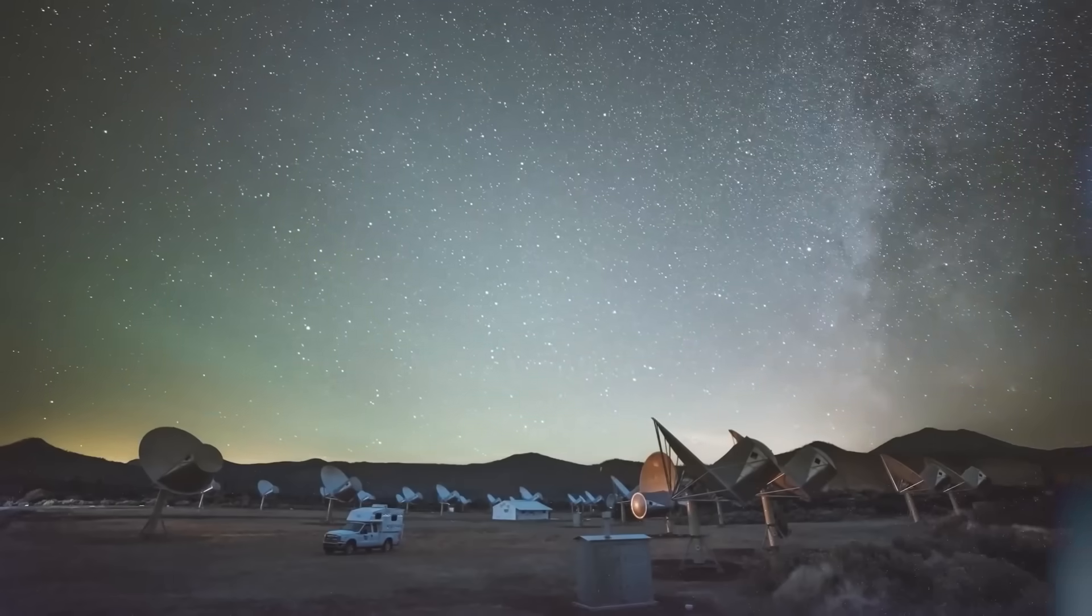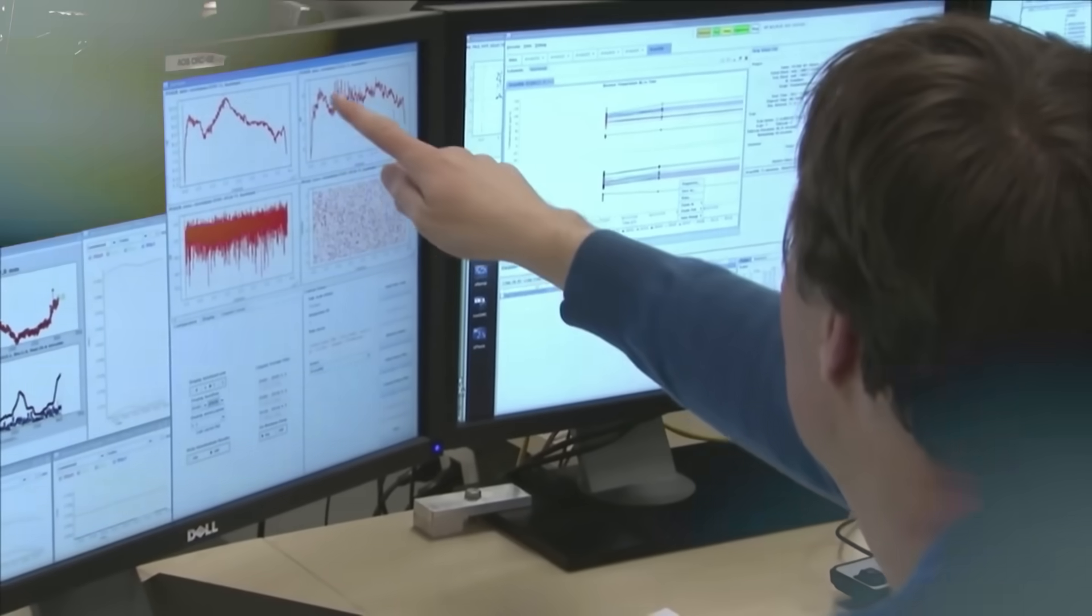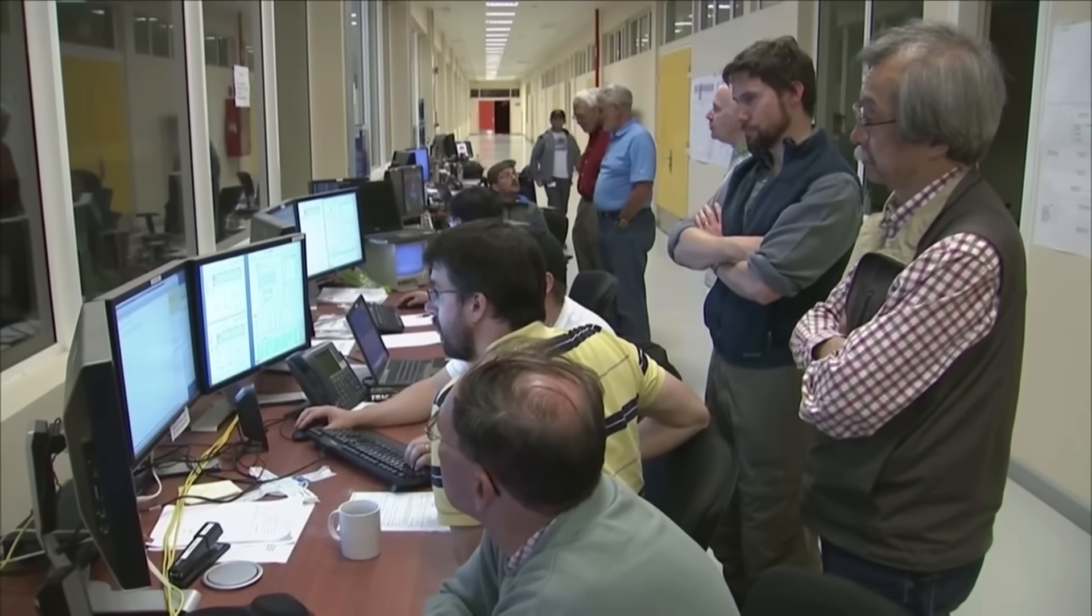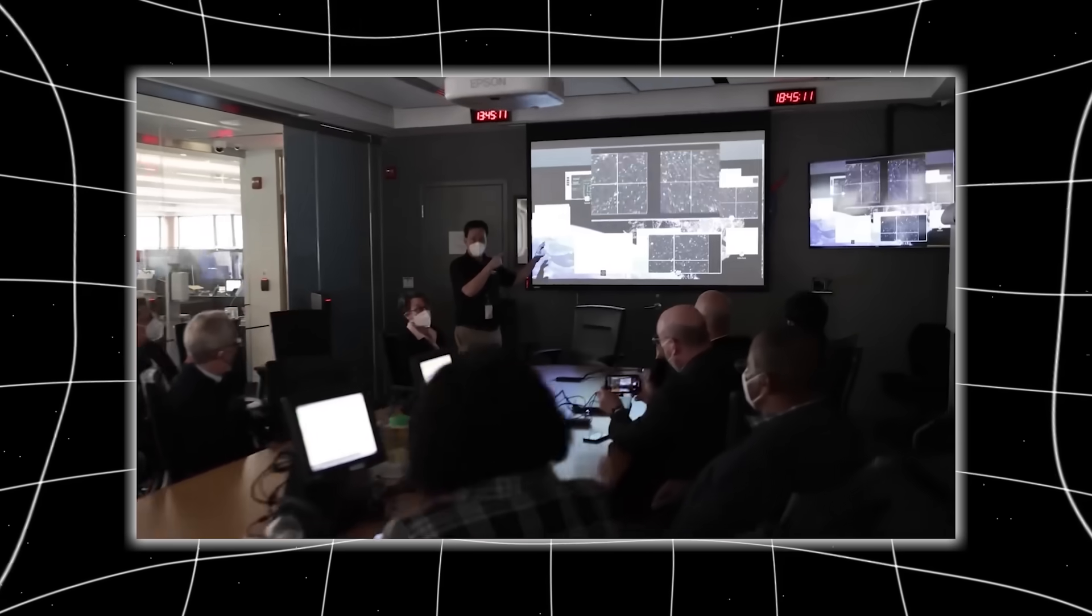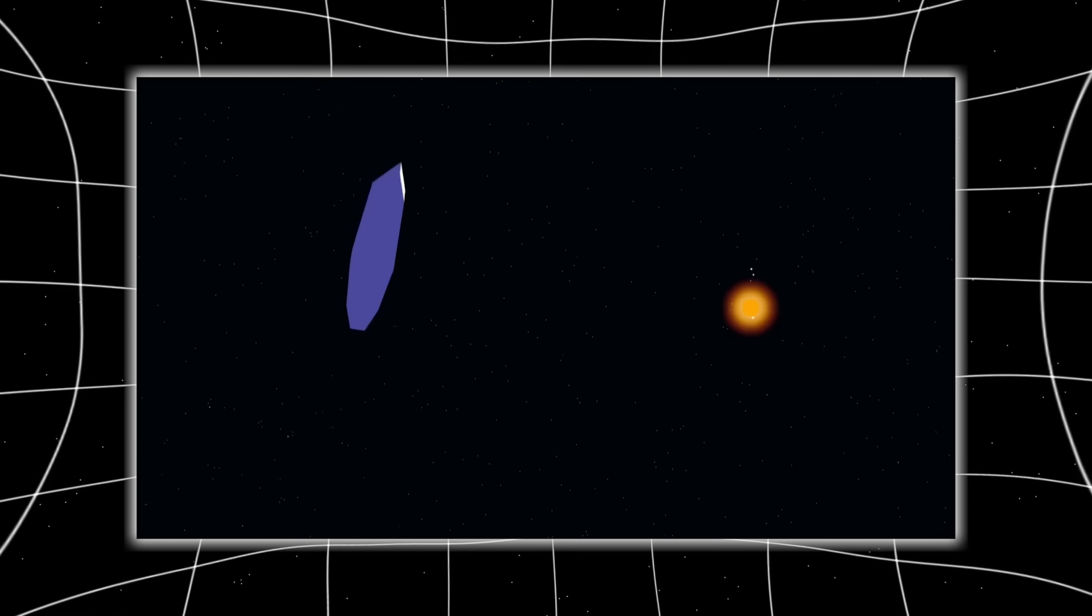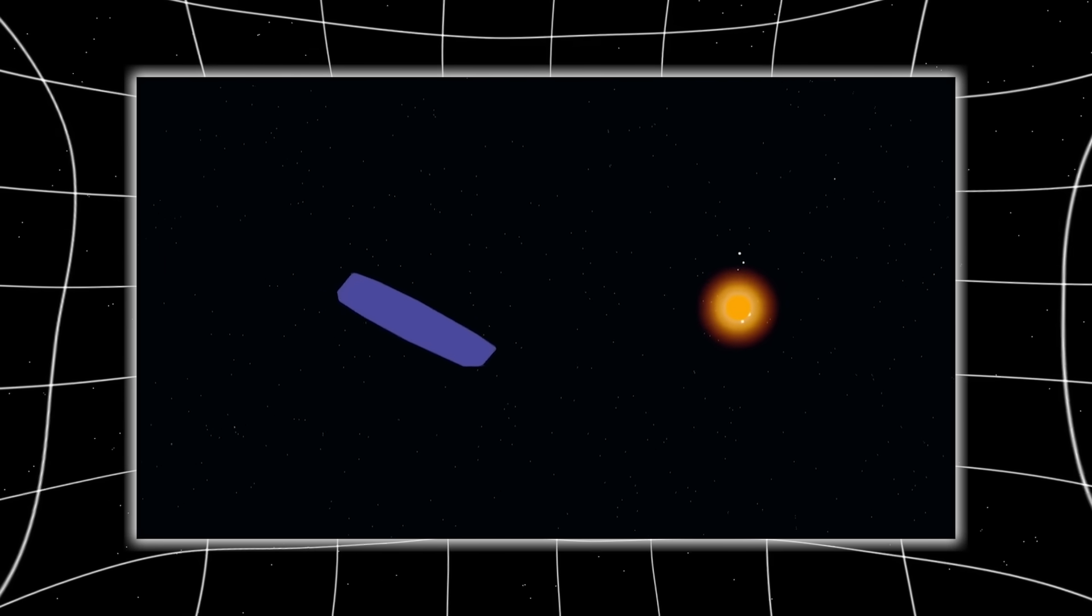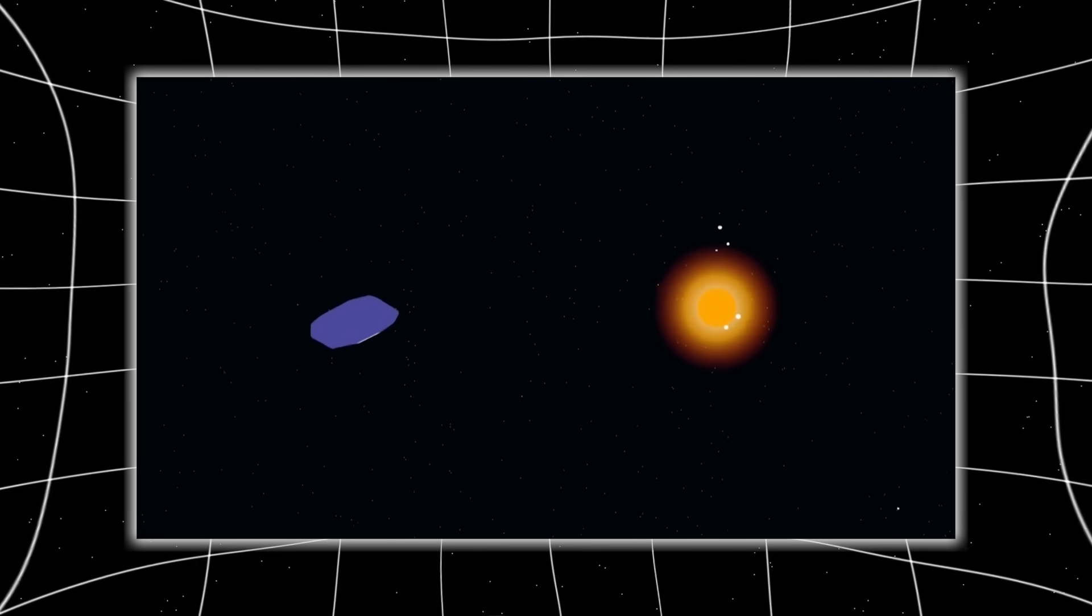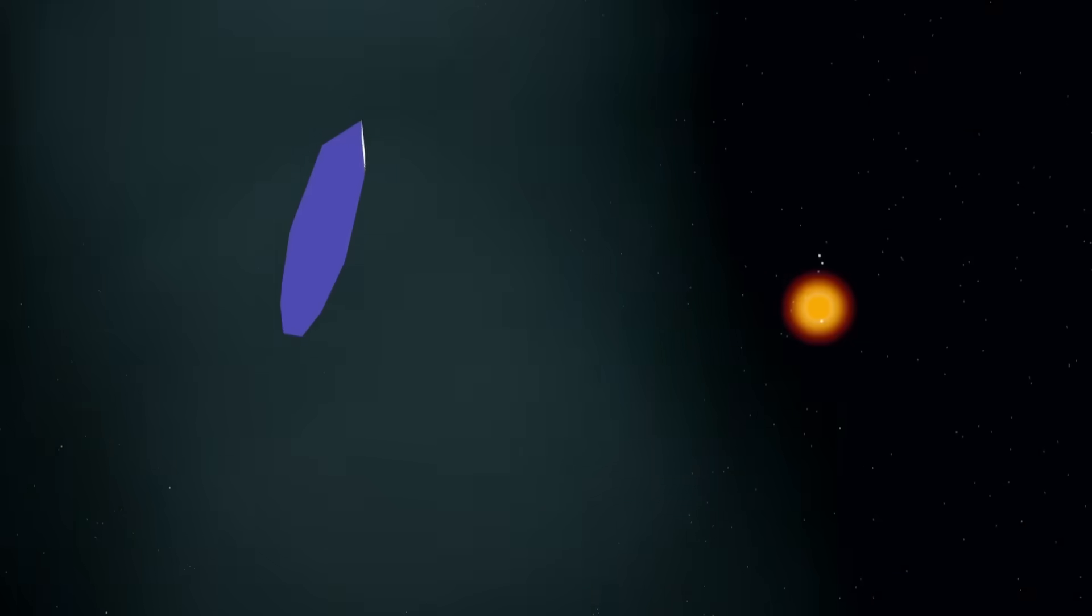With each of these objects, we were left with more questions than answers. But 3I Atlas is different. It combines the inexplicable brightness of Oumuamua with the trajectory of Borisov. It doesn't behave like a rock, but it also doesn't fit neatly into the category of a comet. And now astronomers are considering something even more radical. These may not be isolated events. They may be part of a pattern. A wave. A slow, deliberate sequence of contact disguised as randomness.